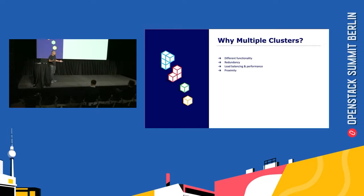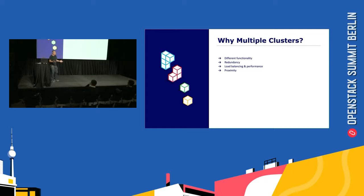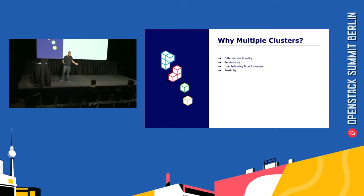One reason is because we have different functionality — each cluster runs different things. One could run the database cluster, one could run the CRM application, etc. What we see more and more in the market is that you take an app and want to distribute it on multiple clusters. The reasons are a few folds: one is redundancy, so if one fails you want high availability. Second is load balancing and performance — you can provision some components here and some there and get better performance. And of course, proximity. Think about Asian users and European users — each one wants to go as fast as possible to the closest data center, so you can distribute your application everywhere.